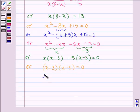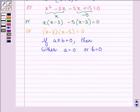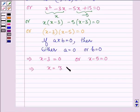Now we know that if the product of two numbers is equal to 0, then either a equals 0 or b equals 0. So this implies that x - 3 = 0 or x - 5 = 0, which means x equals 3 or 5.